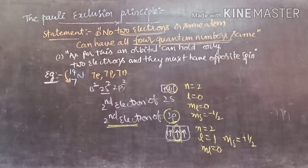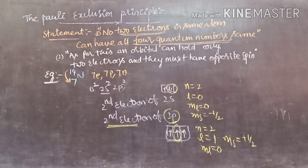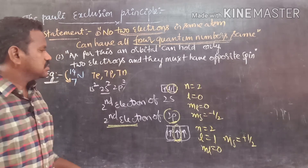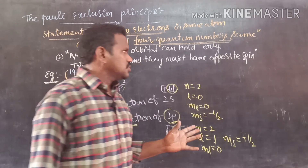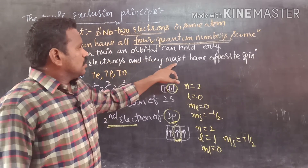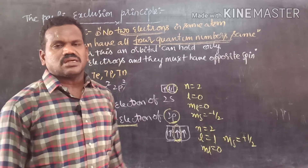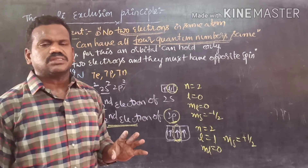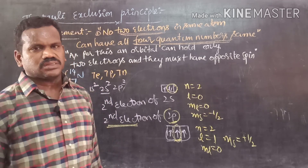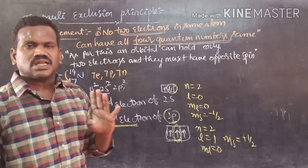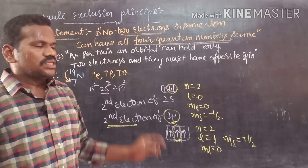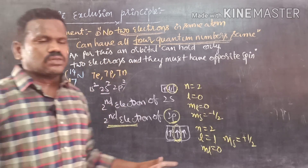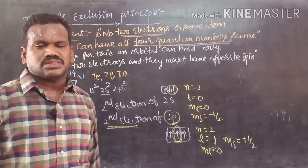The statement of Pauli's exclusion principle: no two electrons of the same atom can have all four quantum numbers the same. This means an orbital can hold only 2 electrons — one with positive spin and another with opposite spin. Every orbital can accommodate a maximum of 2 electrons; there is no chance for a 3rd electron. This is the explanation of Hund's rule and Pauli's exclusion principle used in writing electronic configurations. In the next video, we will learn how to write electronic configurations. Thank you.